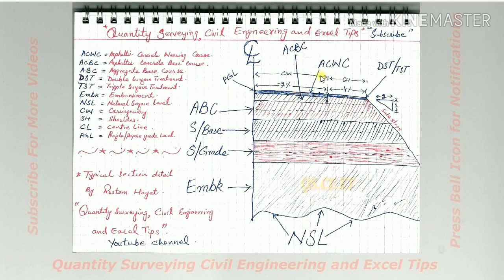Asphaltic concrete wearing course (ACWC)—these are the basic steps. This point is PGL—profile grade level or proposed grade level. CL stands for centerline. This is minus 2% slope of carriageway and minus 4% slope of shoulders.